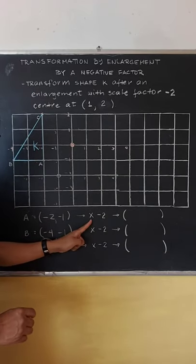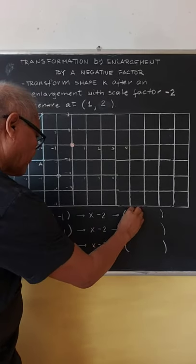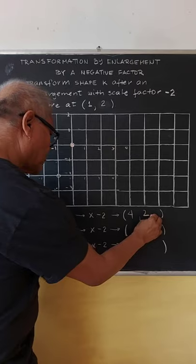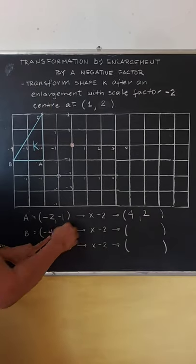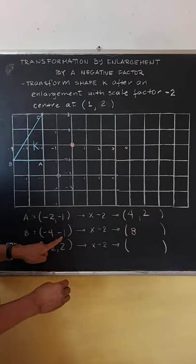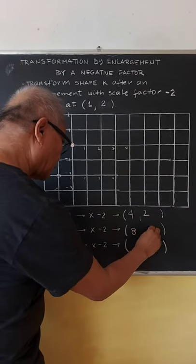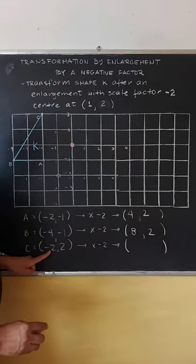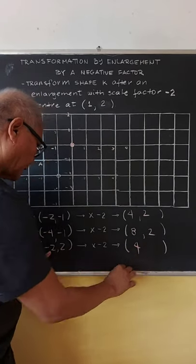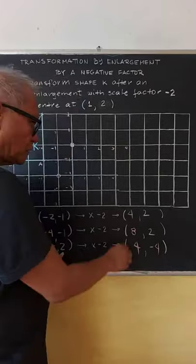And then we multiply by negative 2. So negative 2 times negative 2 is 4, negative 2 times negative 1 is 2 here, negative 2 times negative 4 is 8 here, negative 1 times negative 2 is 2 here, and negative 2 times negative 2 is positive 4 here, and 2 times negative 2 is negative 4.